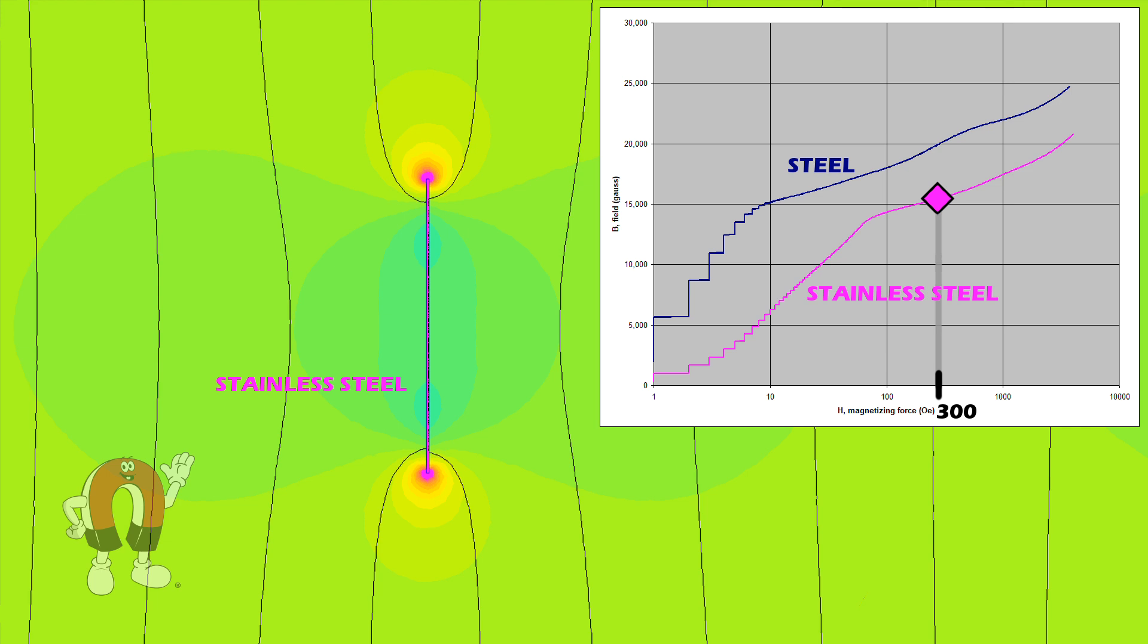If we apply even stronger fields, moving to the right on that graph, we see that our stainless curve never reaches the regular steel curve. The stainless saturates at a lower strength.